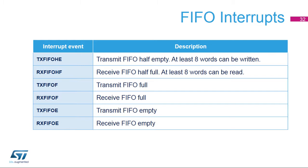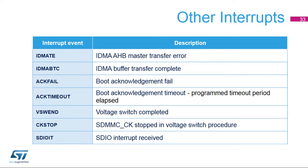Here is the list of flags available for FIFO management in interrupt and polling modes; DMA requests are internally generated when triggered by FIFO threshold events. Here is an overview of interrupt events related to IDMA, boot, voltage switch, and SDIO interrupt. An IDMA master AHB transfer error is signaled by IDMATE. Correct transfer of a complete data buffer is signaled by IDMA-BTC, used with double buffer mode. Boot acknowledgement errors are signaled with ACK fail and ACK timeout. Voltage switch progress is signaled with VSW end and CK stop. The SDIO interrupt is signaled with SDIO IT.